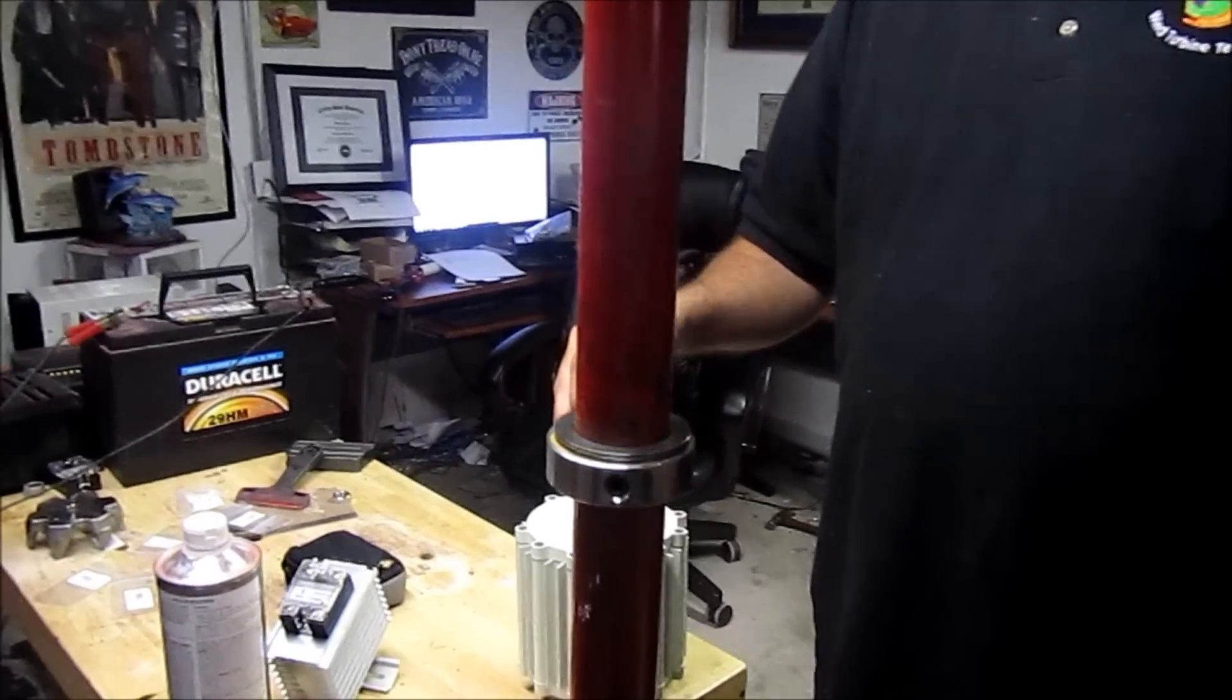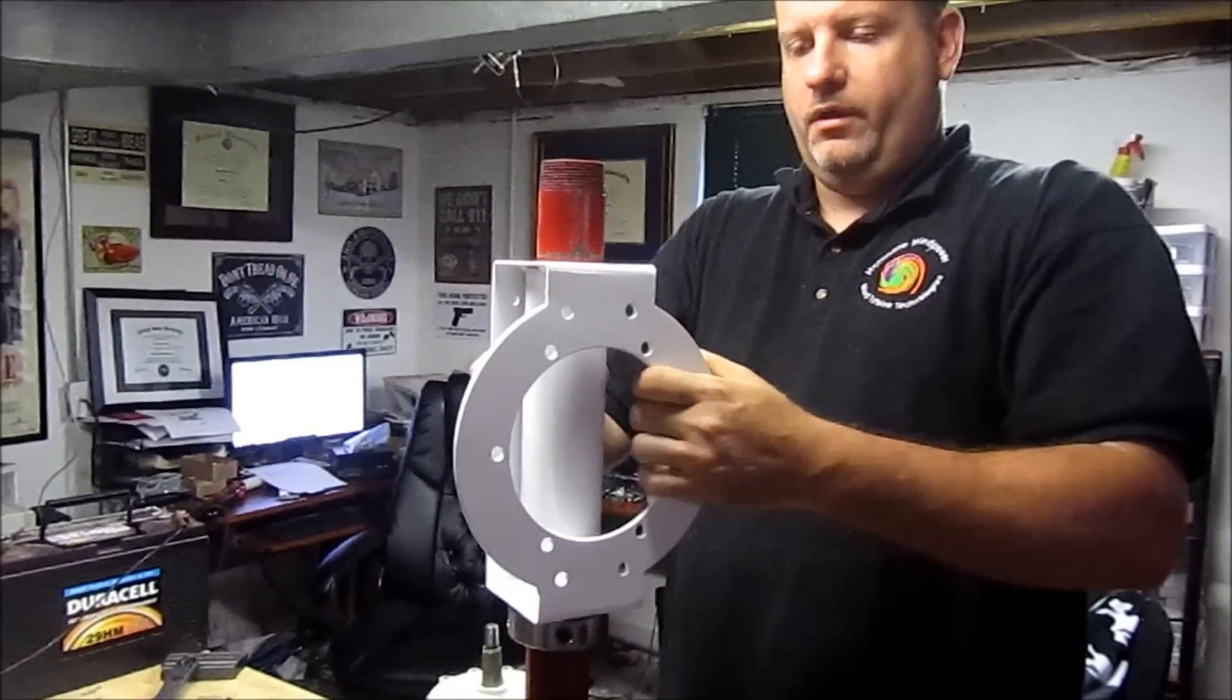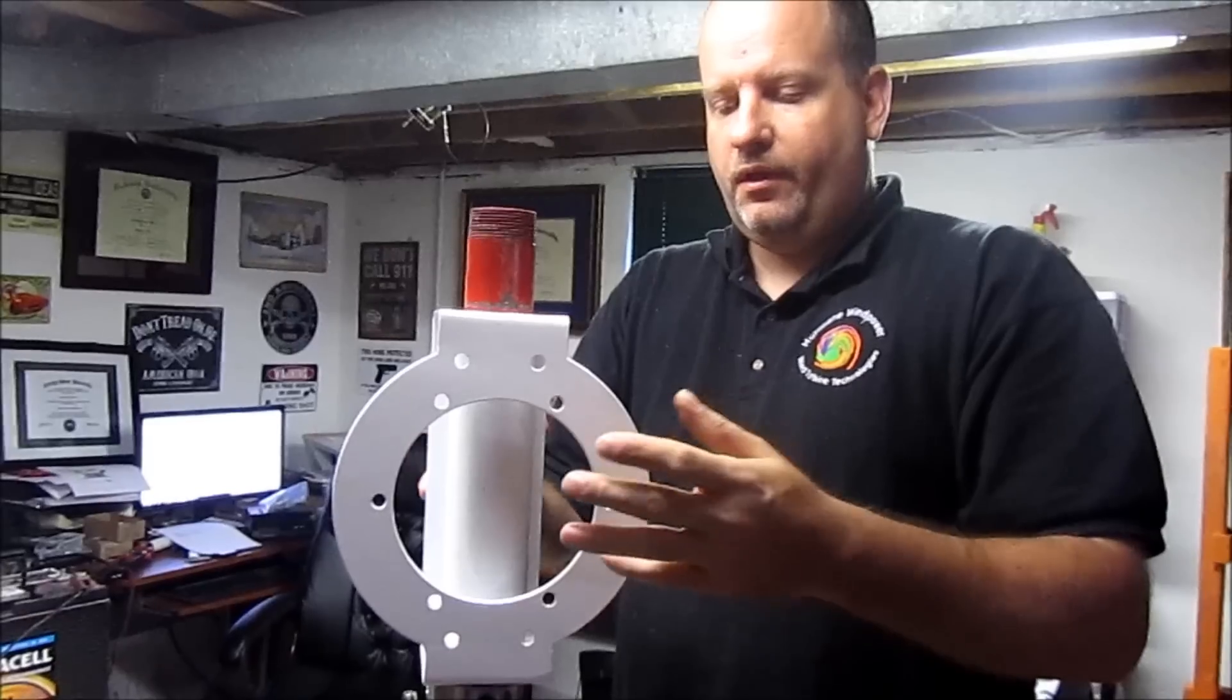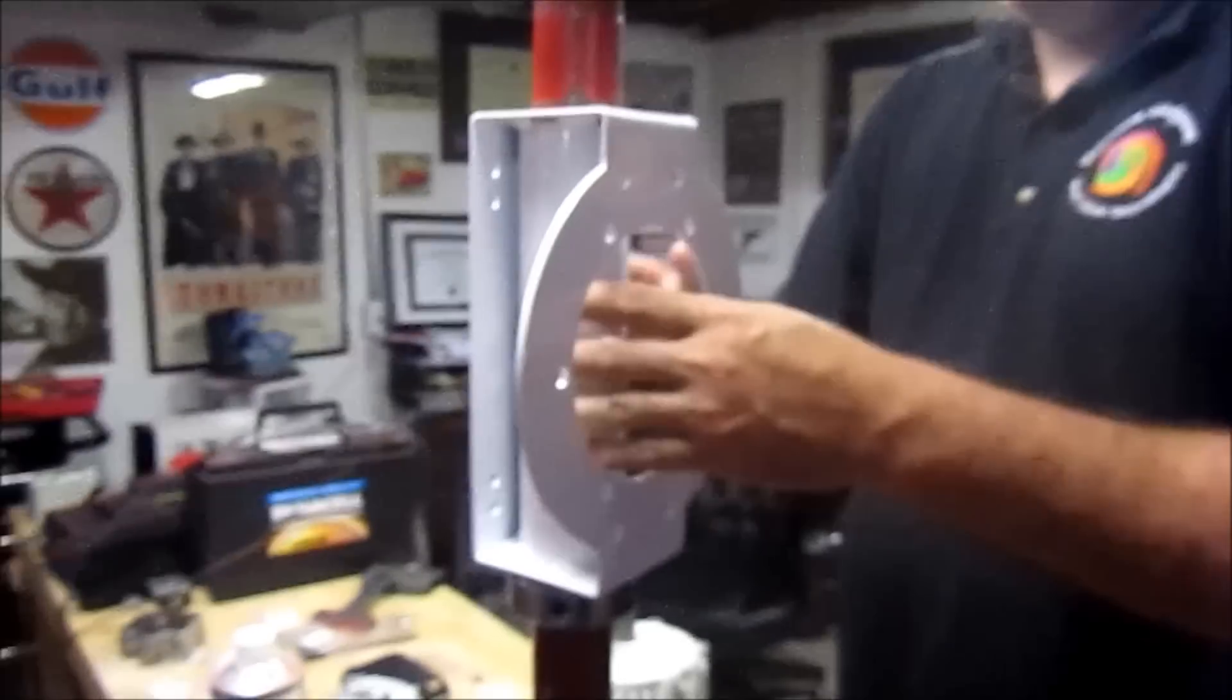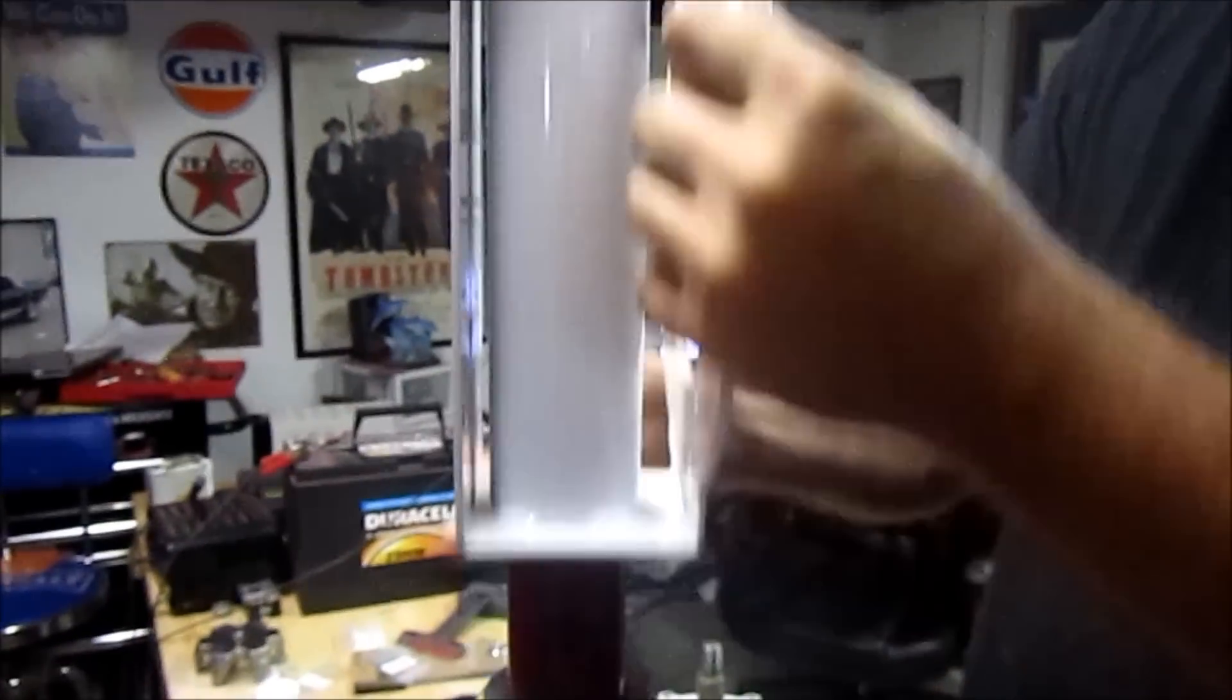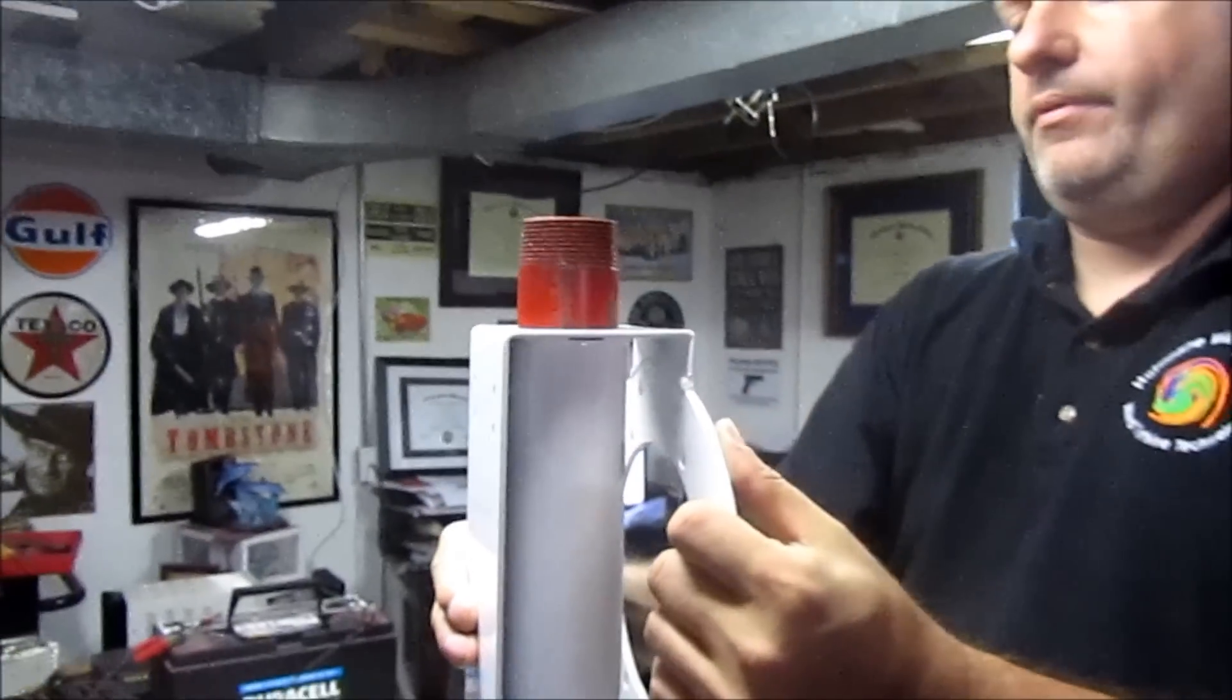Here we've put this yaw bearing on and I have a new mounting base structure. This is actually eighth inch steel plate, it's powder coated, and as you can see this piece actually has a pipe in it.